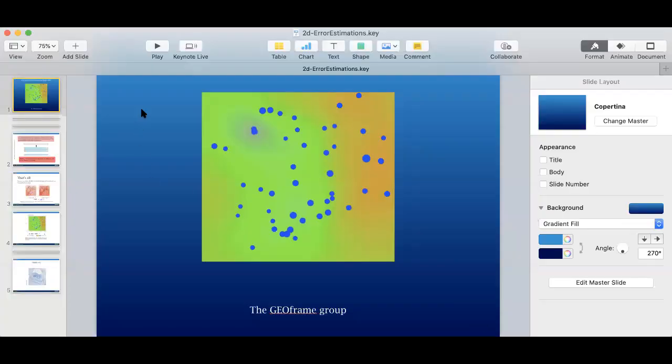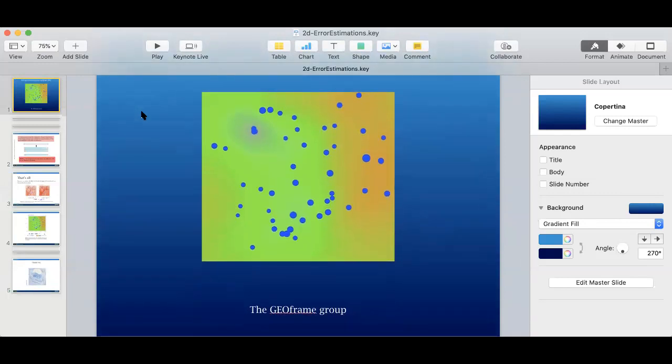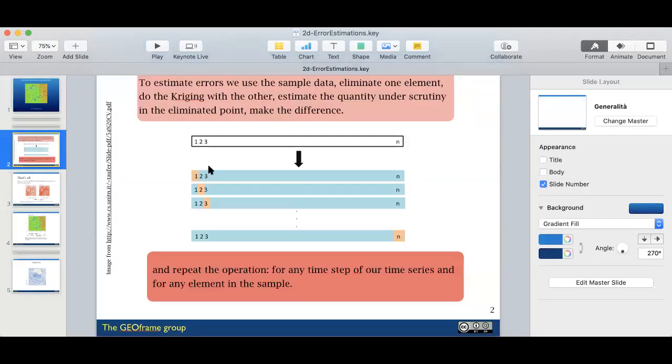We are going to the very last part, which is short in any case. This regards the estimation of the errors. How can we estimate the error when we do some extrapolation? This is actually not a peculiarity of kriging; it can be used in any other process of interpolation.